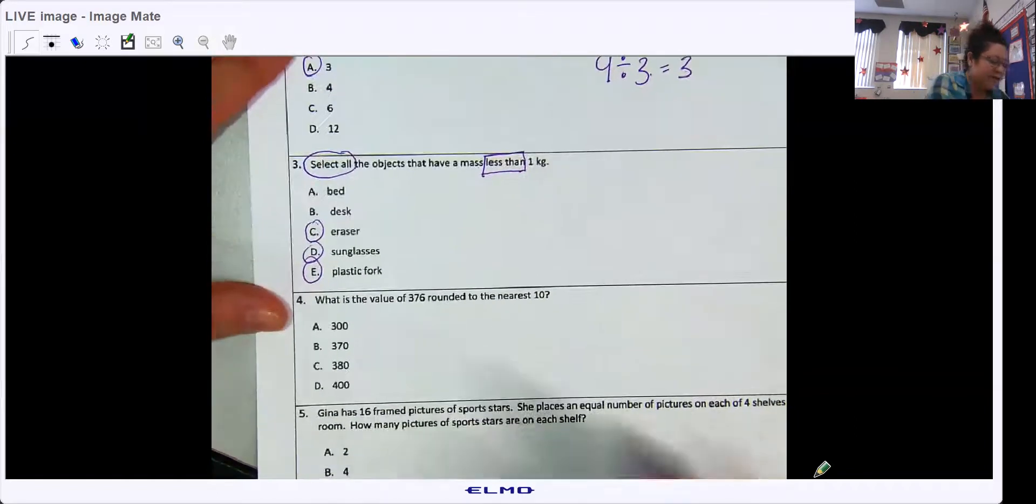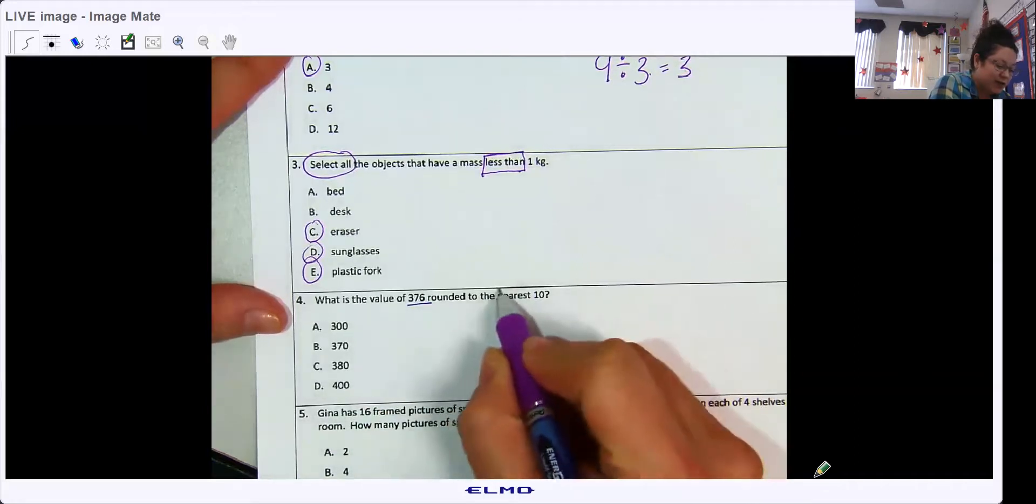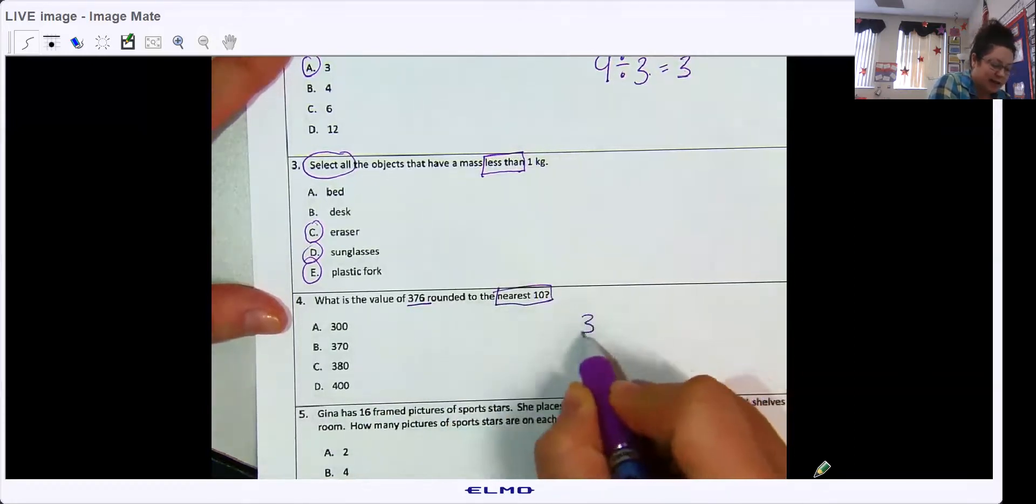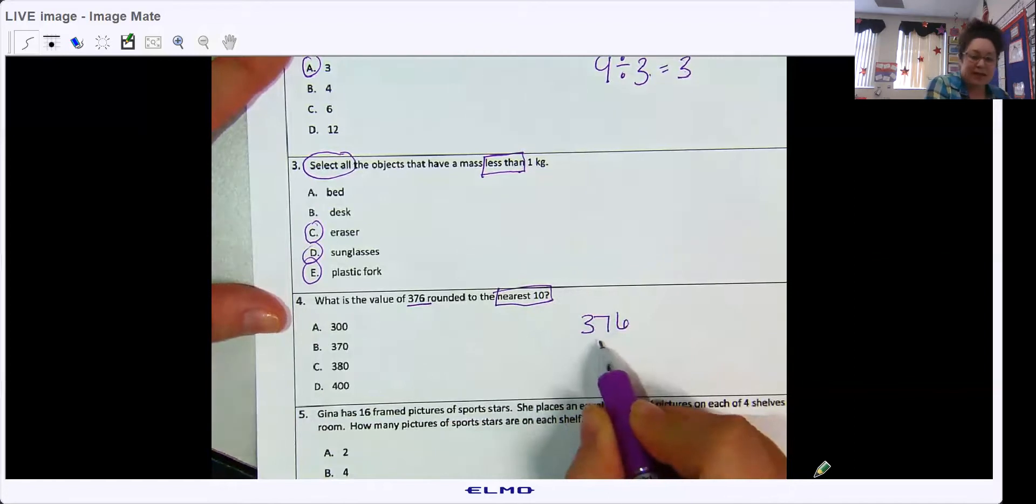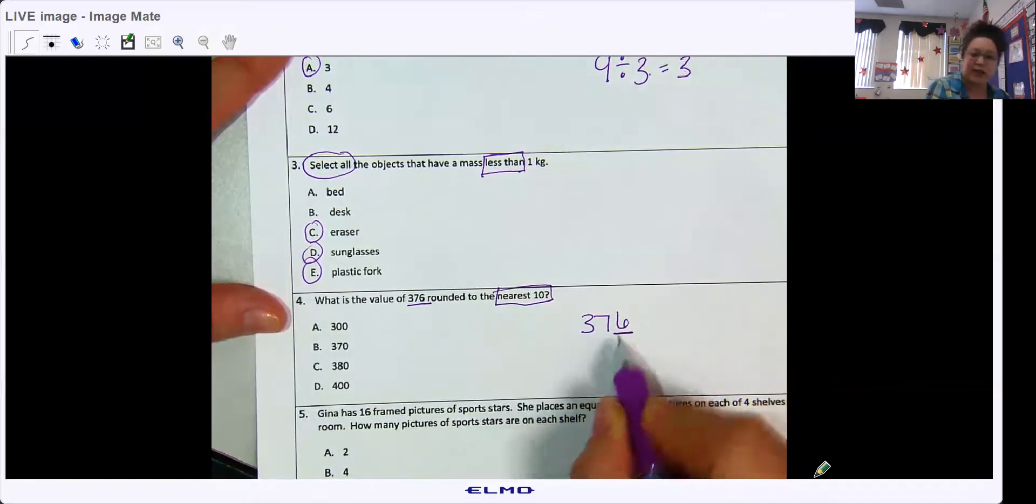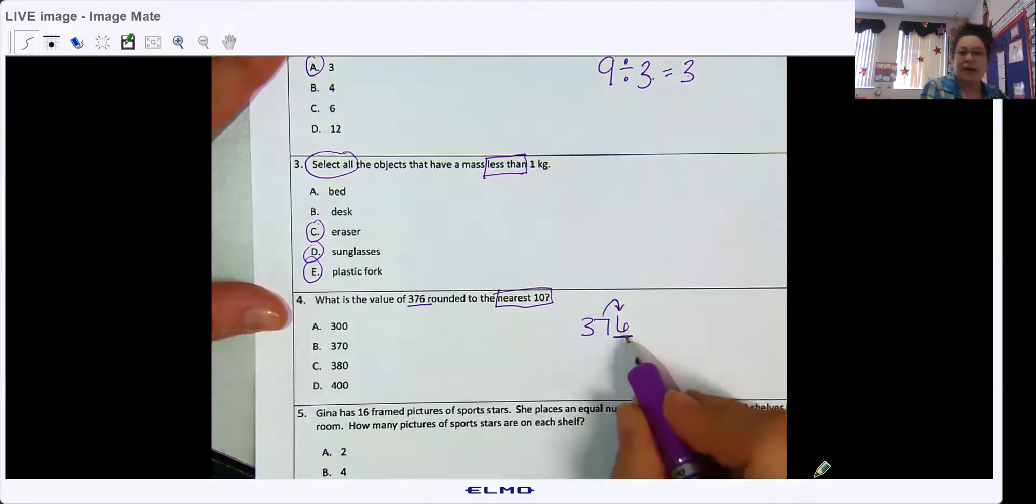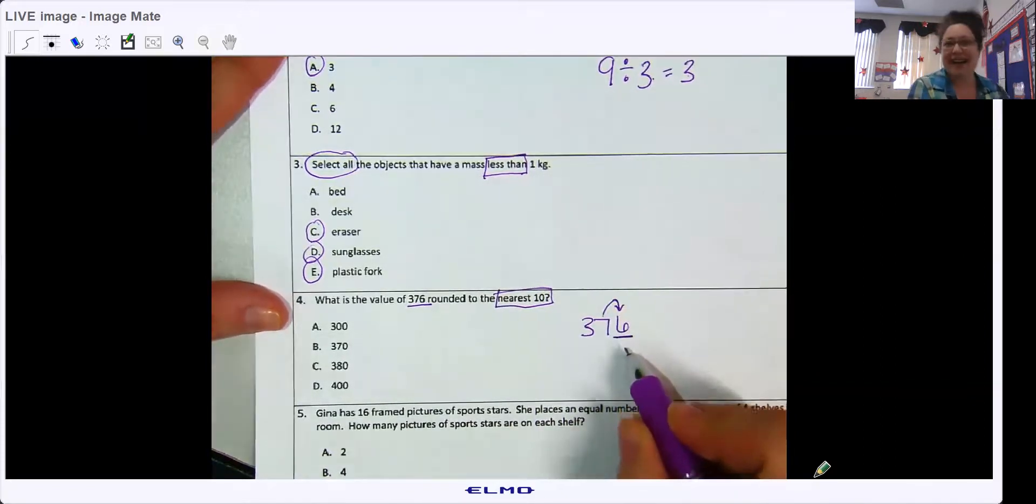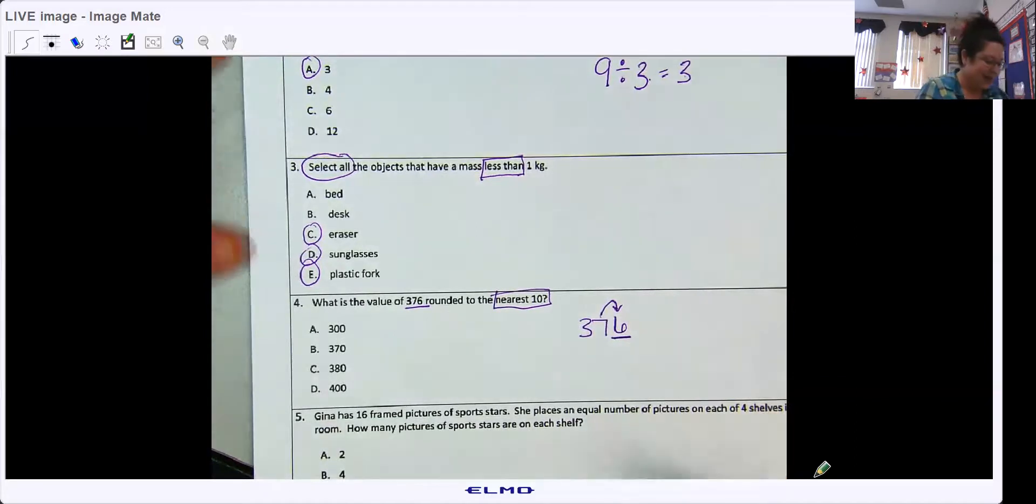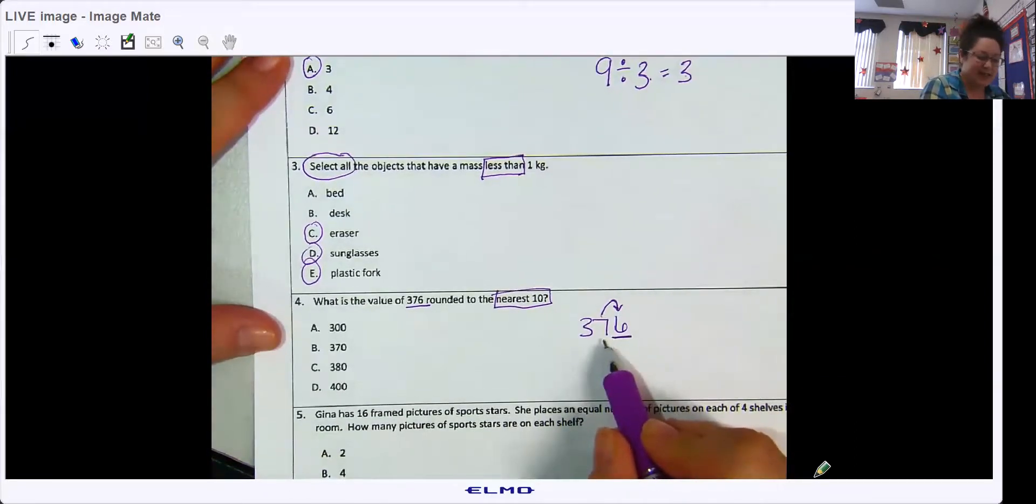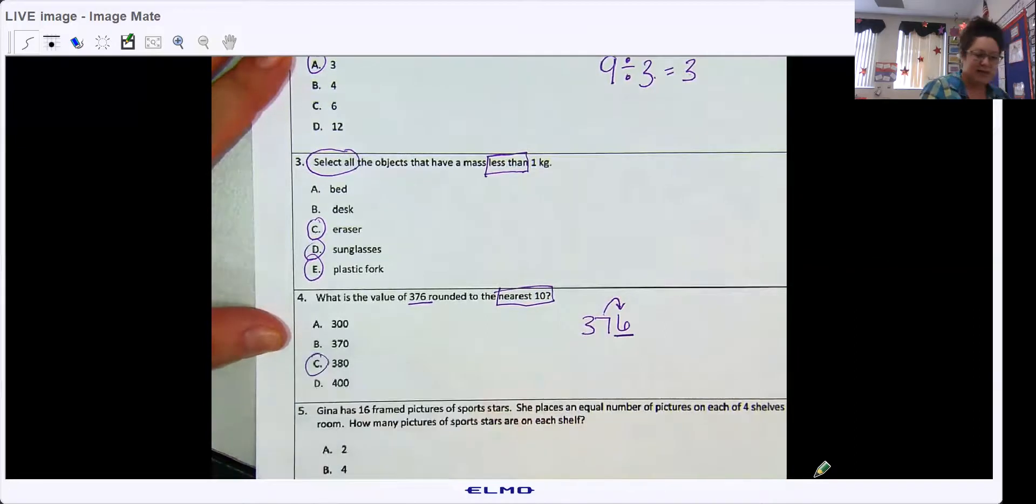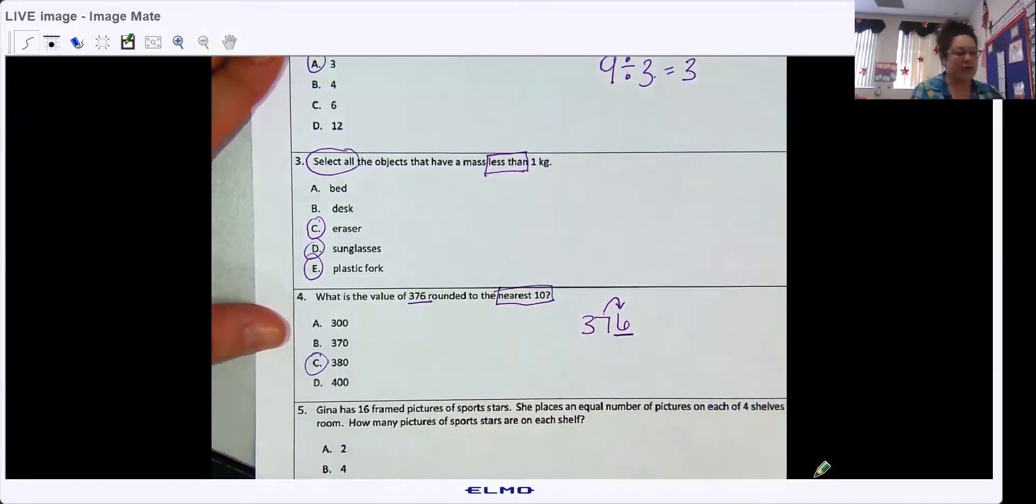What is the value of 376 rounded to the nearest ten? So if I'm rounding to the ten, I look at the ones, right? We've done this many times. Five, six, seven, eight, nine, climb the vine. So my tens is going to go up to 380.